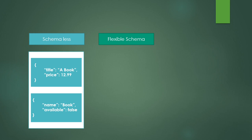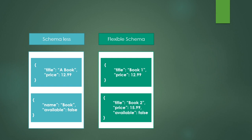The next approach is the flexible schema approach. Here we have somewhat of a structure where documents contain most of the same fields, but some schemas may contain additional fields where necessary. For example, both documents have a 'title' and 'price' field, but the second document has an additional 'available' field set to false. The field values don't have to be the same — it's more about the field names being consistent. This is the flexible schema.